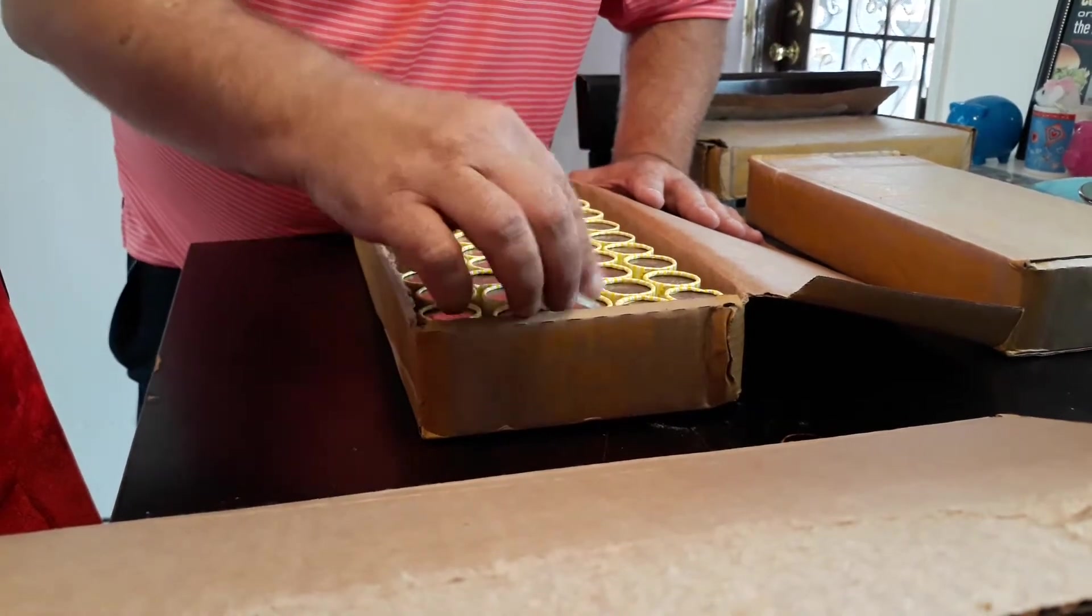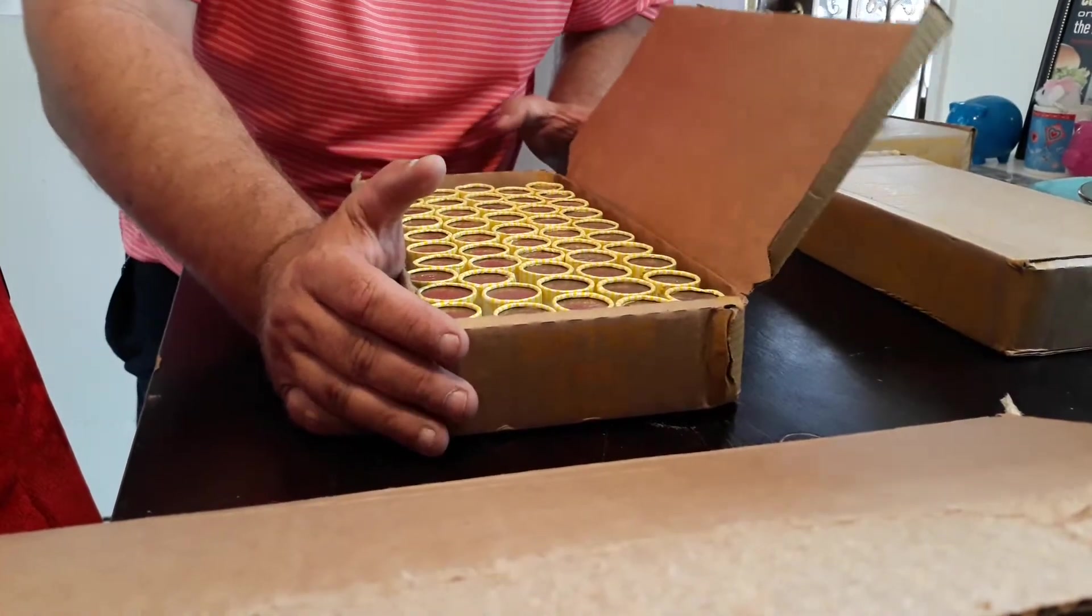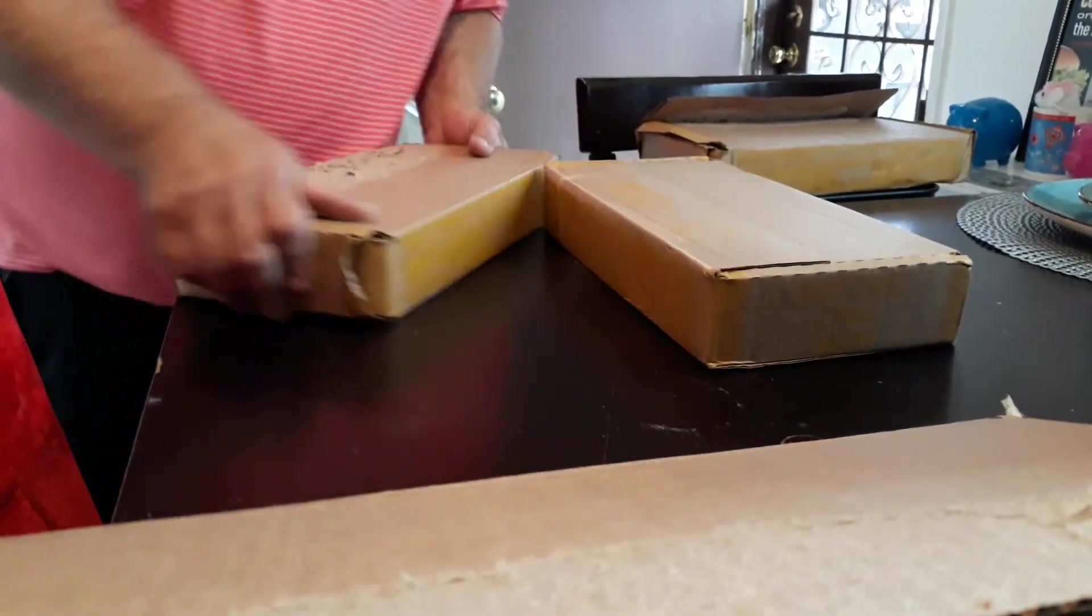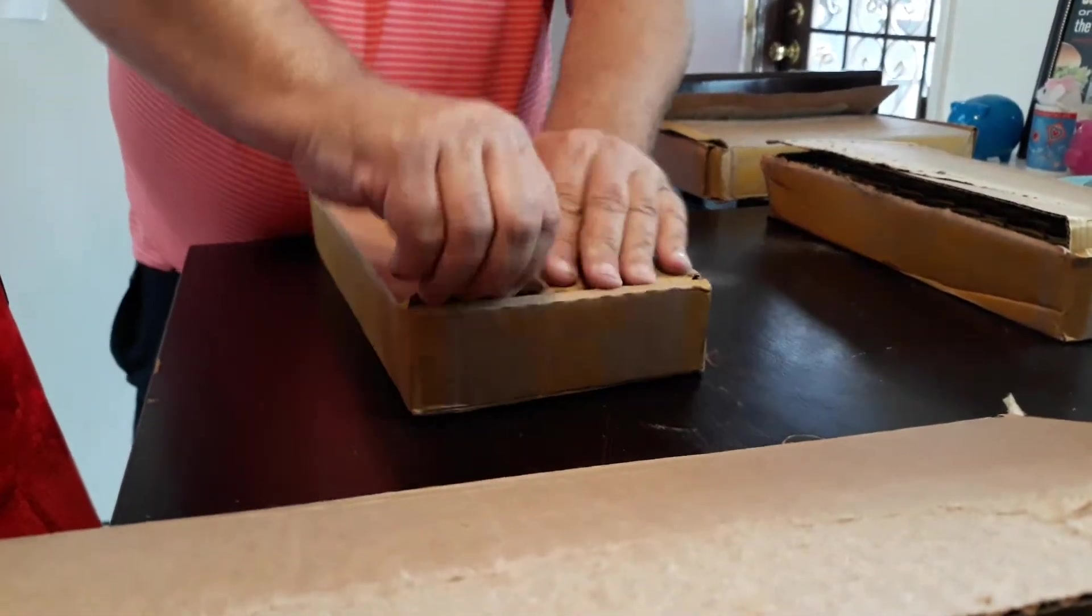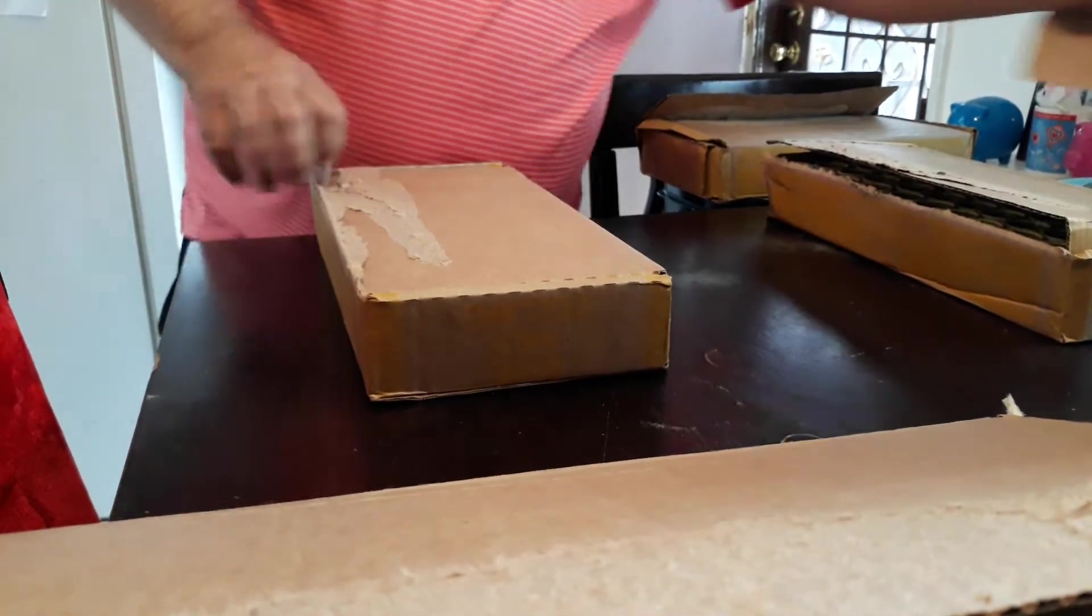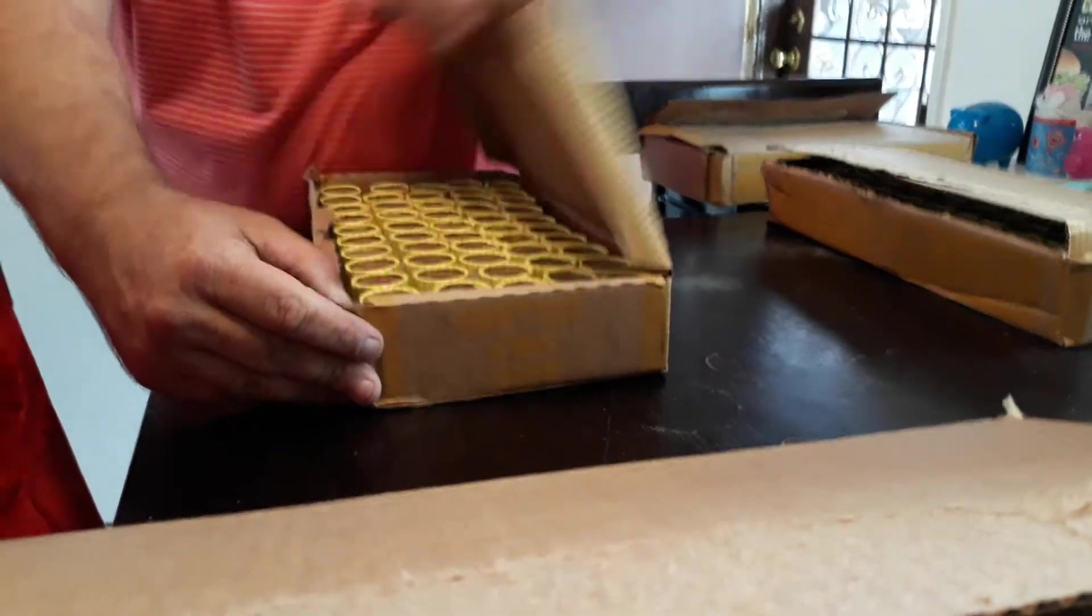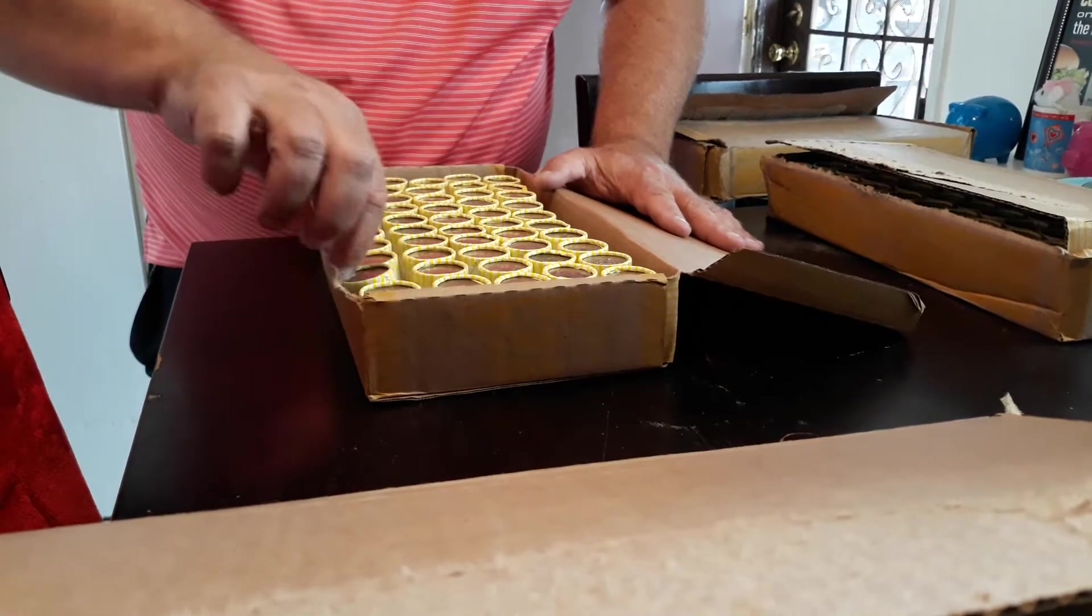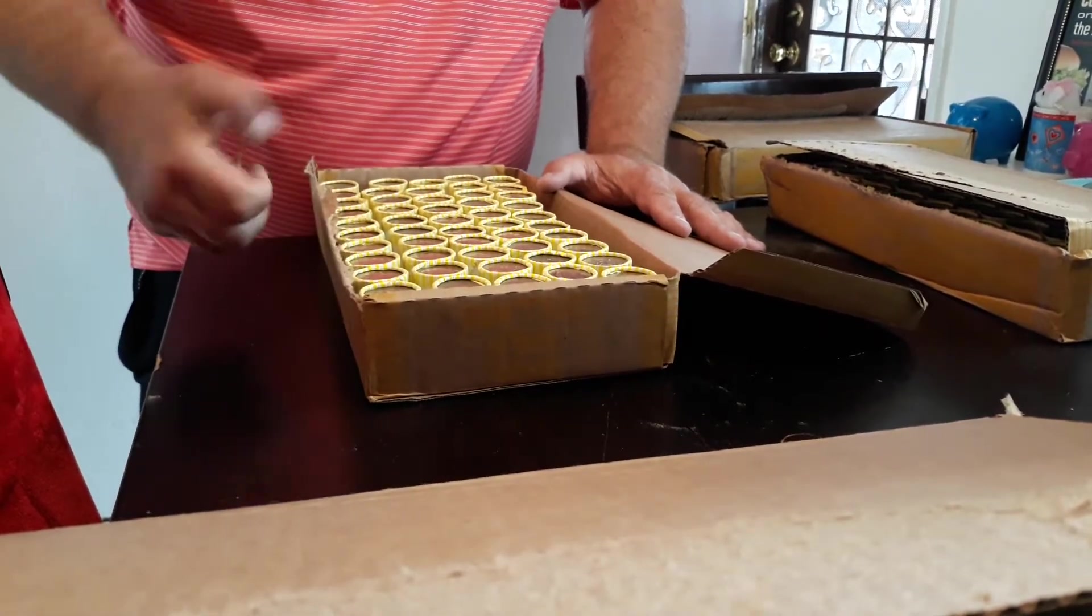All righty, let's see what this last box looks like. All right, this box is also circulated. So just as I thought guys, it's just that one that was stamped 72-29 that's an uncirculated box.